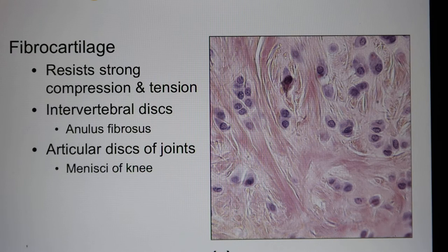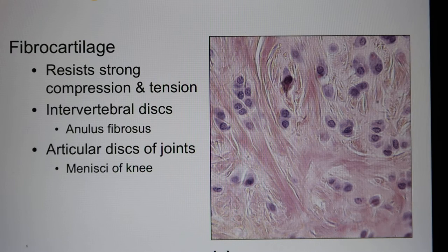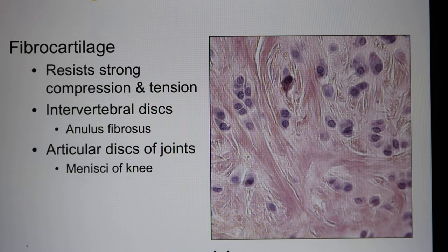The third one is fibrocartilage — that's the strong cartilage. It is placed where it needs to support a lot of physical weight, like the intervertebral discs between vertebrae. Also in your knee, you have the meniscus — those pads in the knee that take the pressure you put on the knee. That's fibrocartilage.